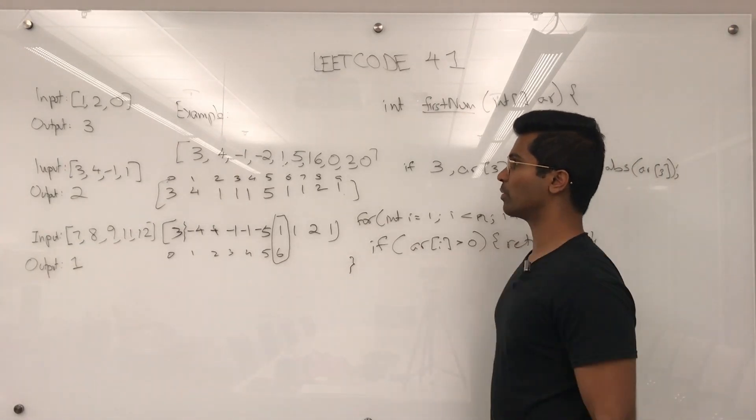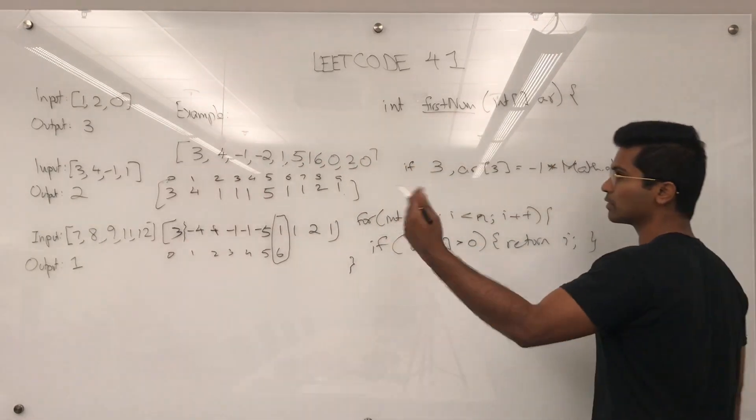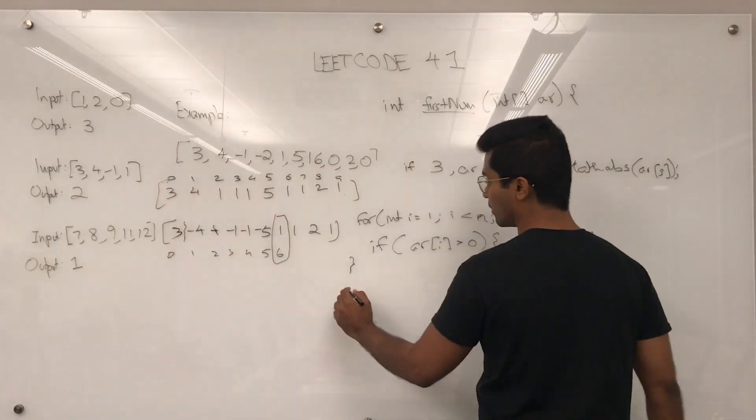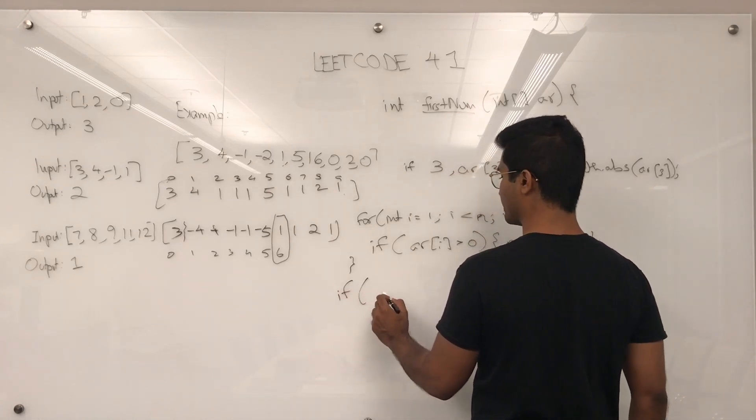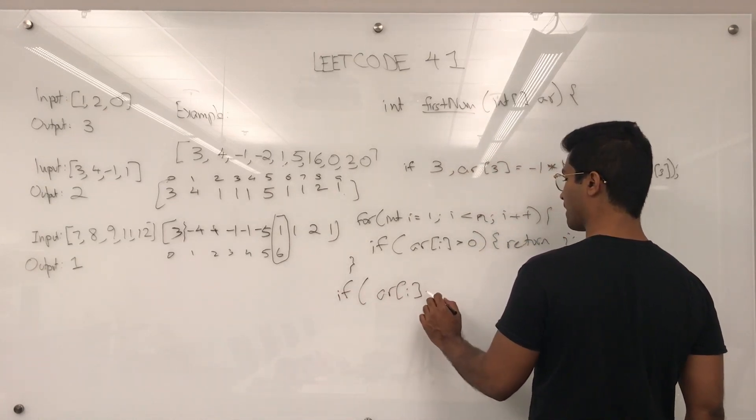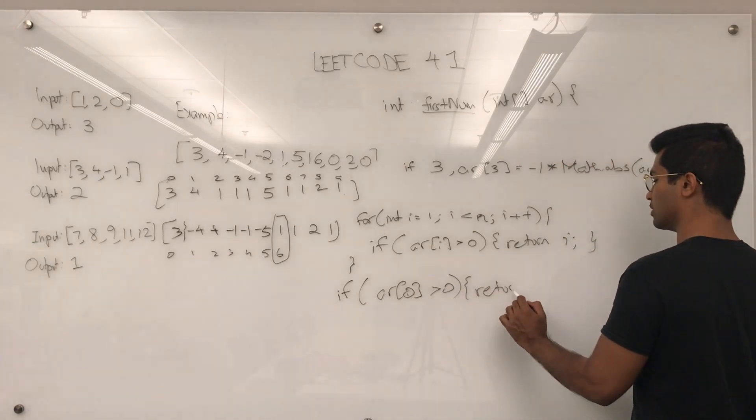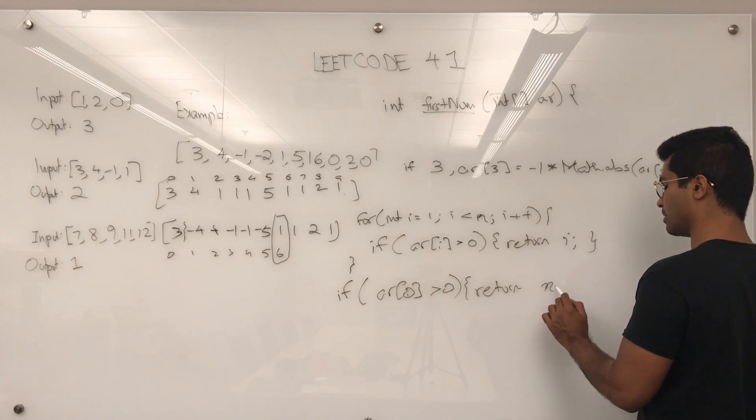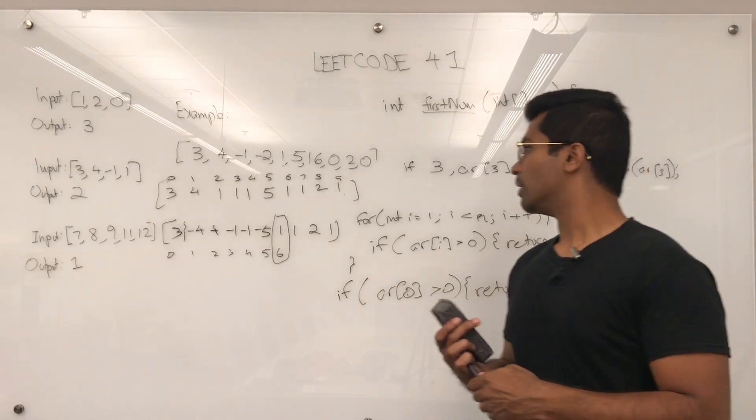But in the case where we have to return 3 or something larger, what we have to do is if array[0] is greater than 0, then return n plus 1.